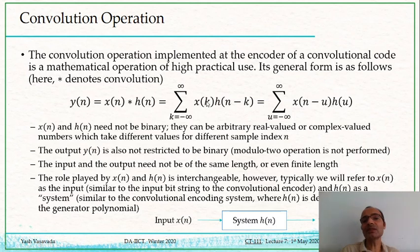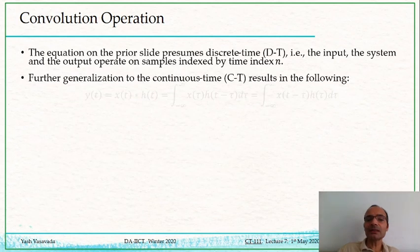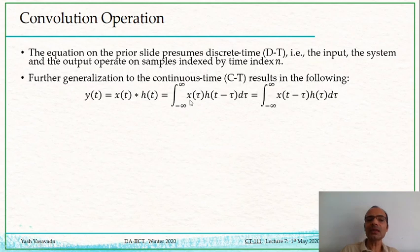But otherwise, this term inside the integral looks pretty similar to what we had with the discrete time. This variable k has been replaced by tau, and n has been replaced by t. And therefore you will see that this equation looks quite similar to what we had for the discrete time case.